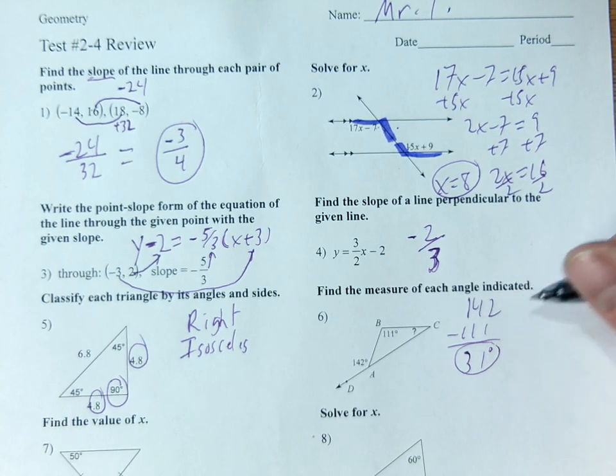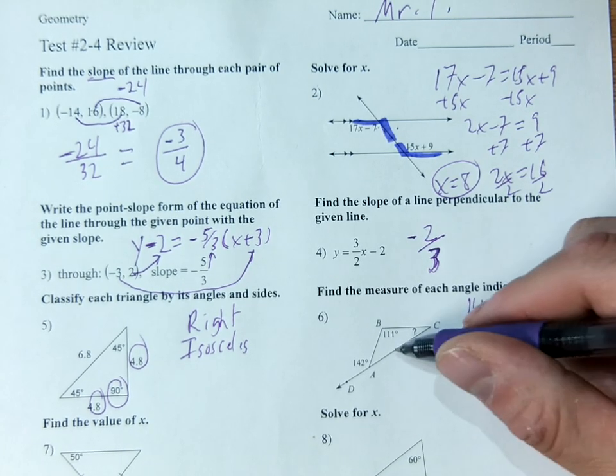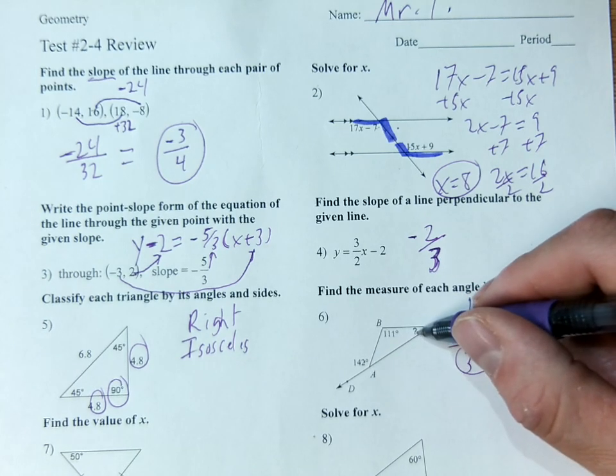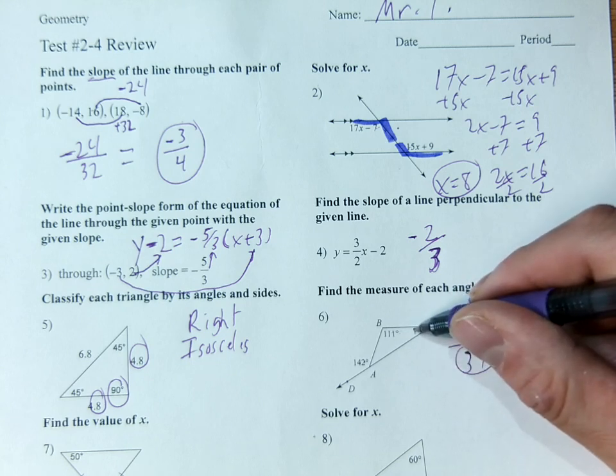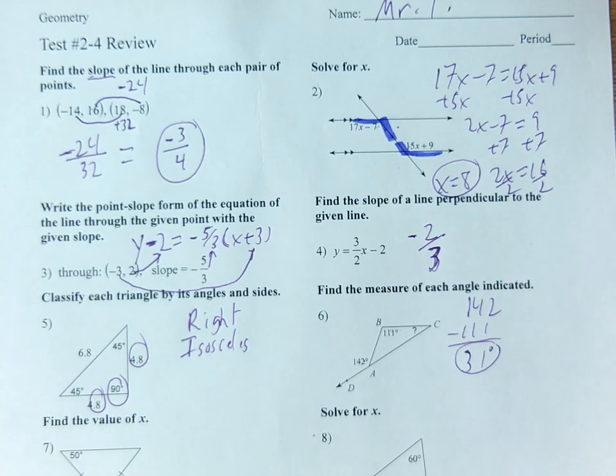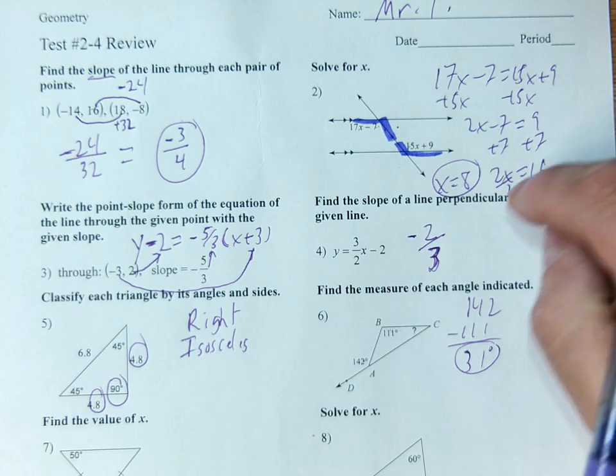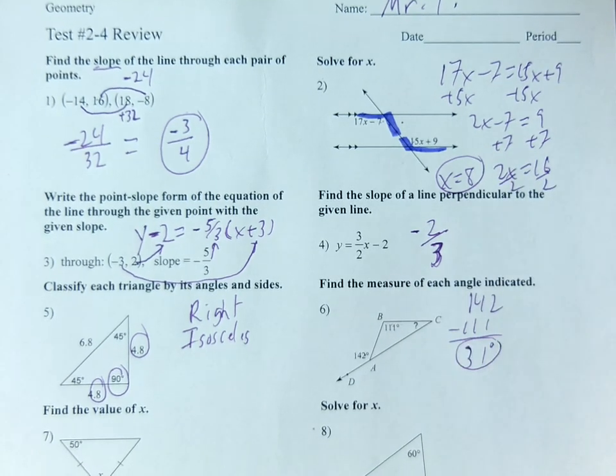Now again there's three options I can do here. I can give you the outside angle and one of the inside angles, in which case you subtract. I can give you both inside angles, in which case you add. Or I can switch these angles around, in which case you subtract as well. It's going to be one of the three.